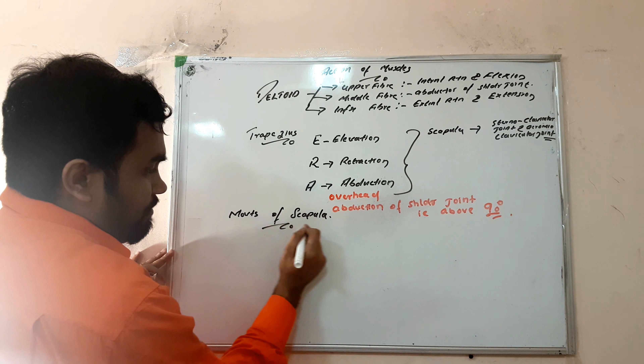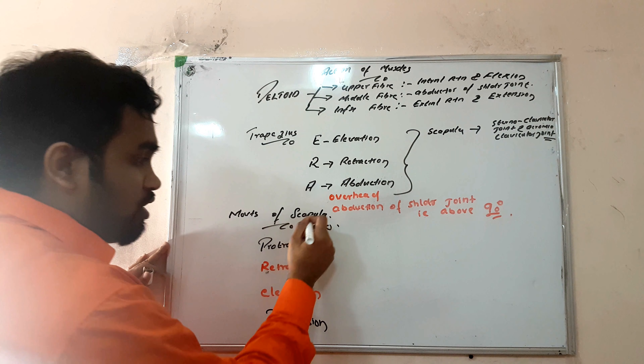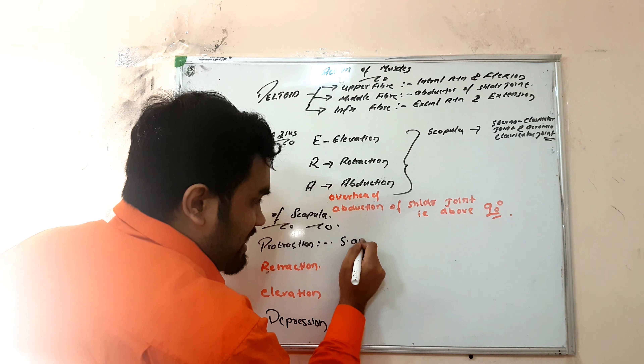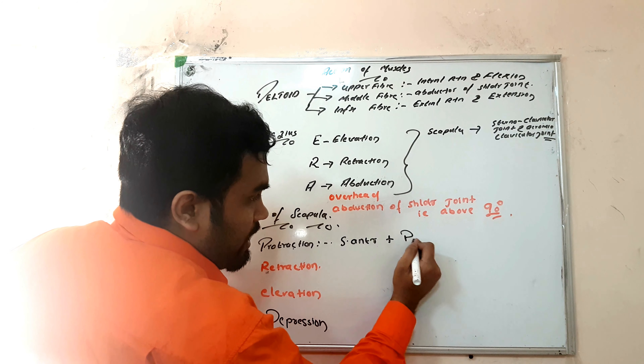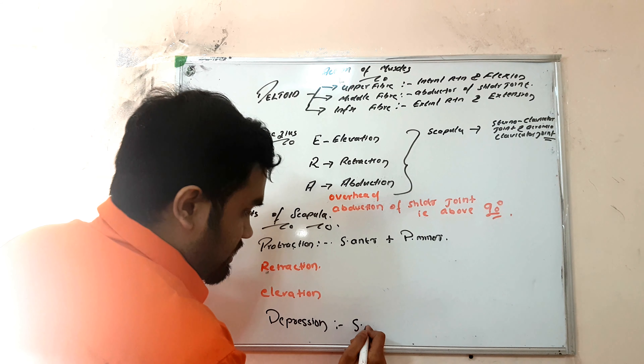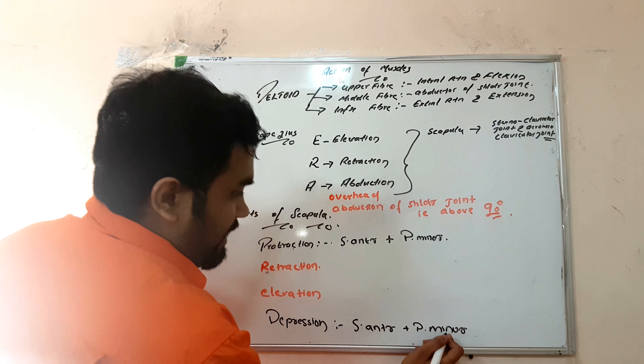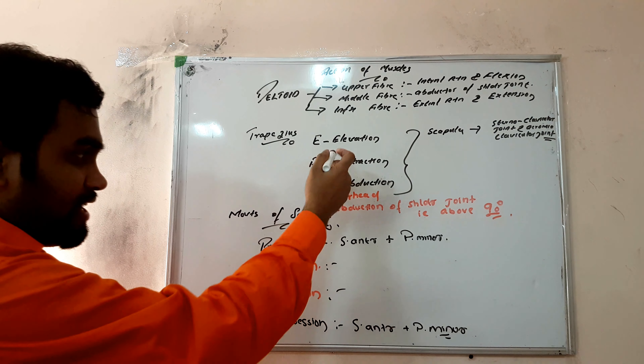The upper fiber is responsible for internal rotation as well as flexion - very easy to remember. The inferior fiber is responsible for external rotation and extension. The middle fiber, as you already know, deltoid is the main abductor - it is the abductor of the shoulder joint.